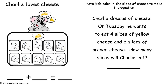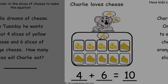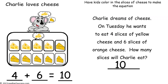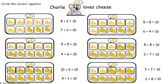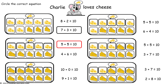Now read this story with kids: Charlie dreams of cheese. On Tuesday he wants to eat 4 slices of yellow cheese and 6 slices of orange cheese. How many slices will Charlie eat? Have kids cut out the slices of cheese and place them on the 10 frame to make the equation. This is a completed example: 4 slices of yellow cheese plus 6 slices of orange cheese equals 10 slices of cheese. A second option is to have kids color in the slices of cheese to make the equation. This is the completed example.